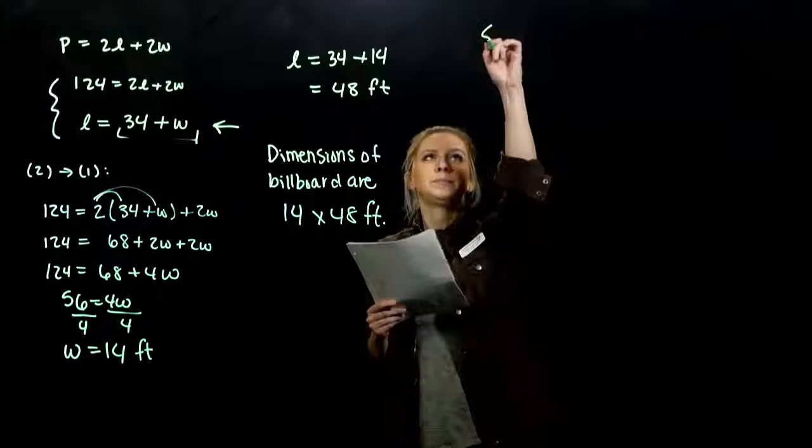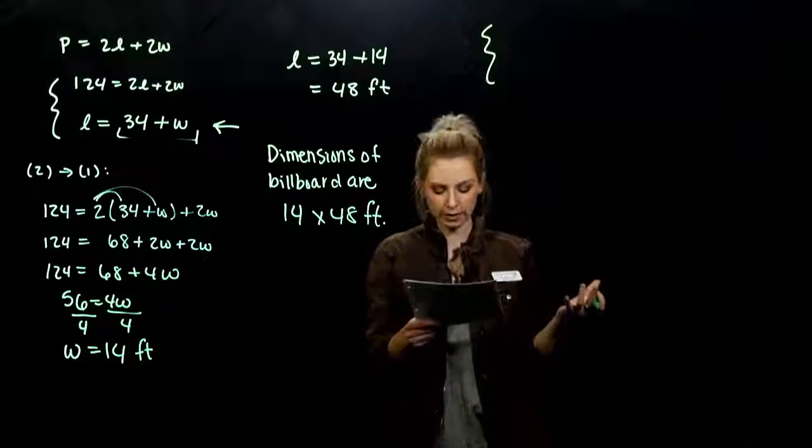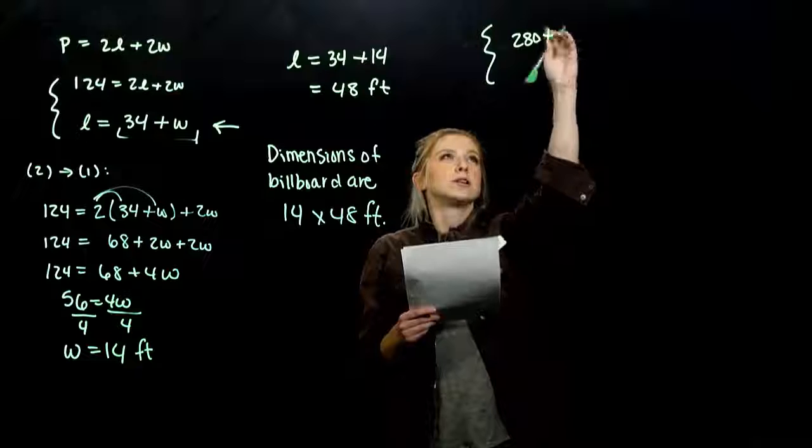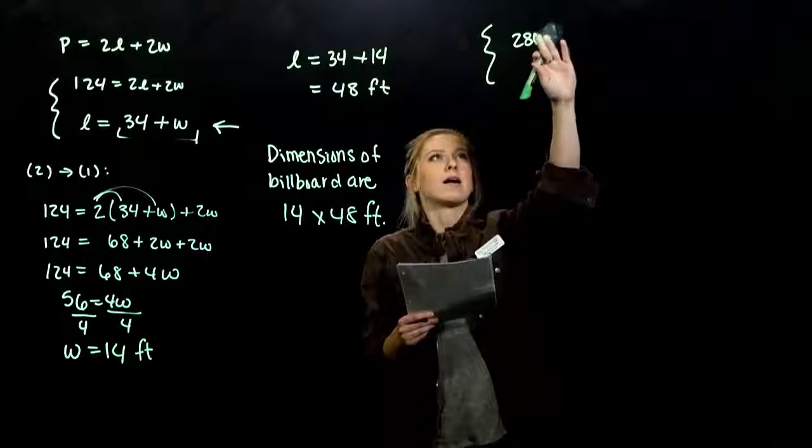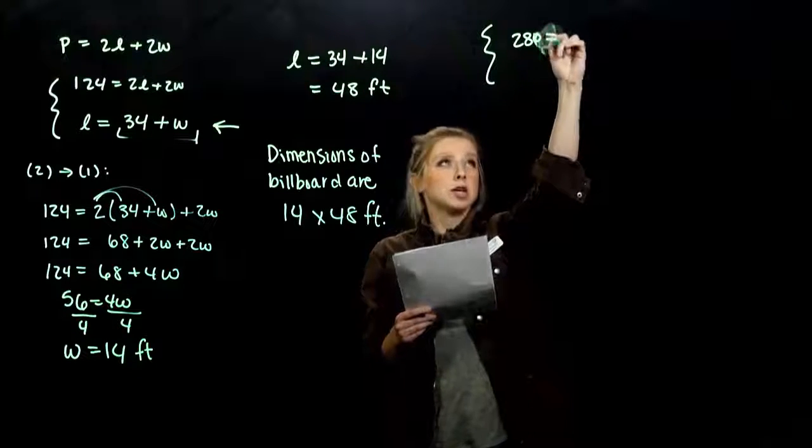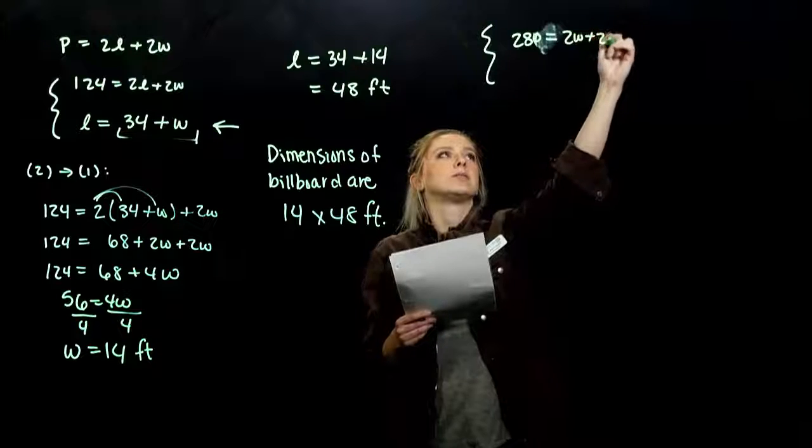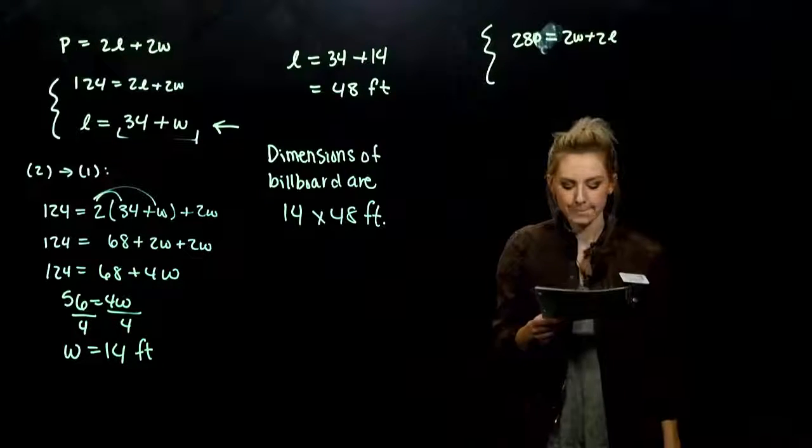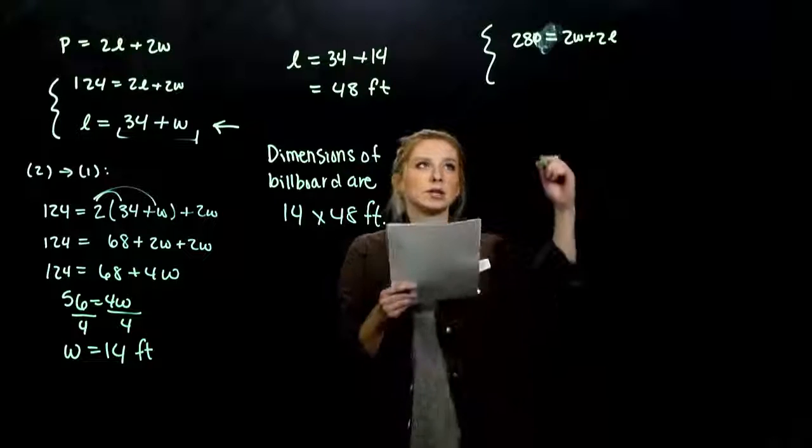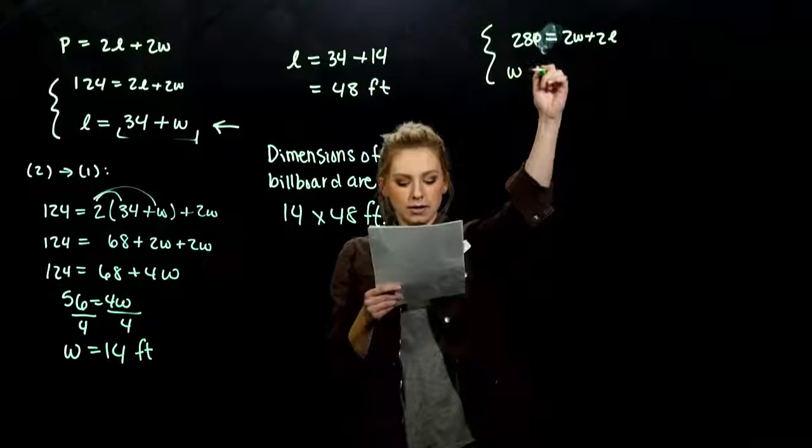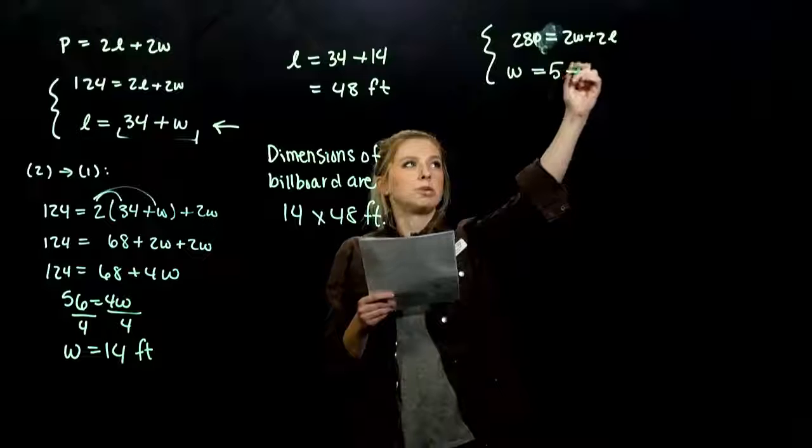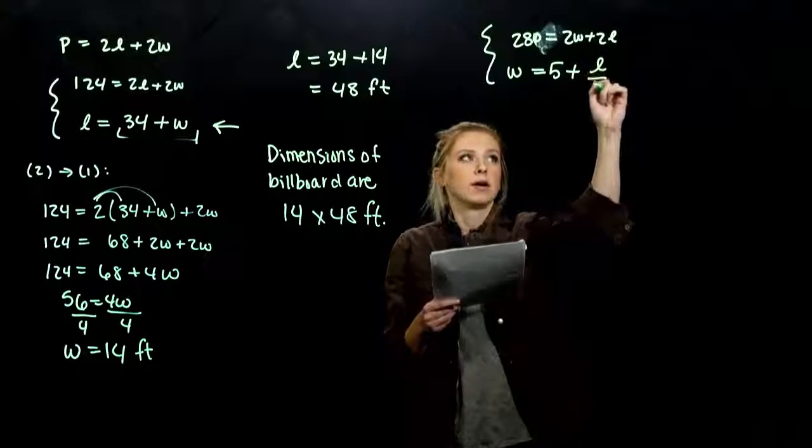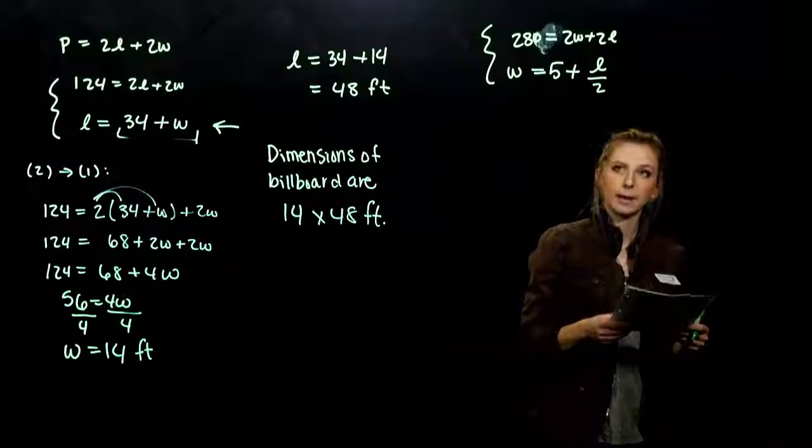So what formula are we dealing with? That perimeter adding up all the outsides is 280. That's usually the easiest one to pluck off. So 280 is equal to 2W plus 2L. Two times the length, two times the width. And our other piece of information: The width is 5 more than half of the length. So L divided by 2.